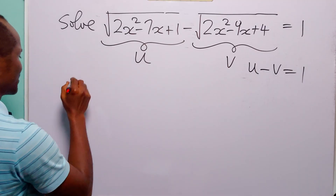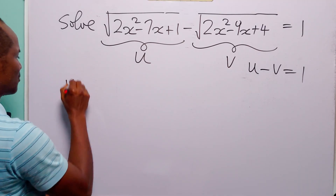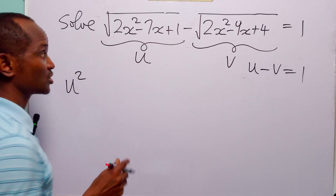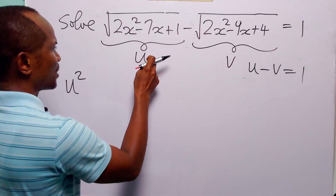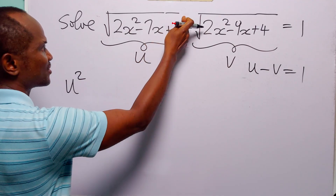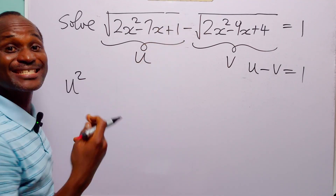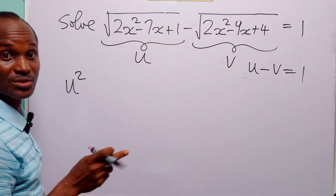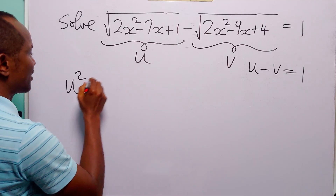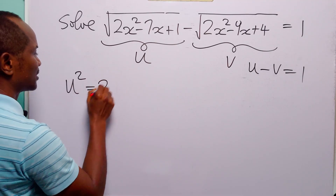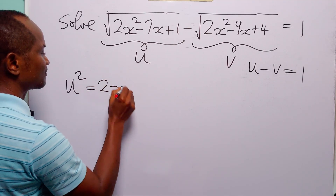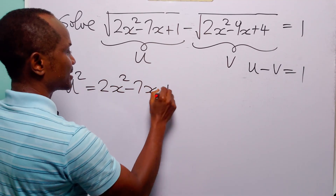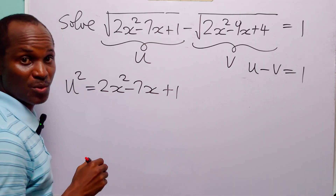Now the next thing we are going to do is find u squared. And of course, you know that when we square this quantity, the square is going to take care of the square root.